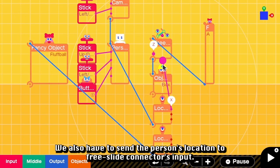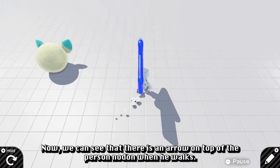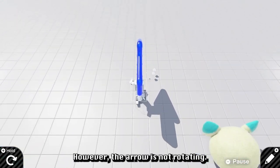We also have to send the location of the person Nodon to free slide connector input. Now we can see that there is an arrow on top of the person Nodon when he walks. However, the arrow does not rotate yet.